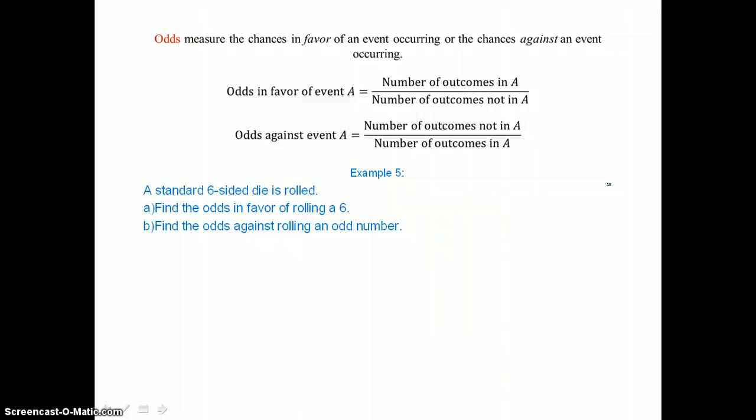In example 5, a standard six-sided die is rolled. In A, we want to find the odds in favor of rolling a 6. So in favor of means that we want number of outcomes in A on the top. And since there's only one six on this die, we have 1 in the numerator. And then in the denominator, the number of outcomes not in A would be the other five numbers on this six-sided die. So we have a 1 in 5 odds in favor of rolling a six, or we could write that as 1 to 5 using a colon. We could write it as a fraction or we could write it using our colon.